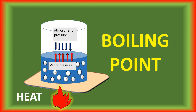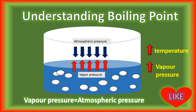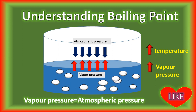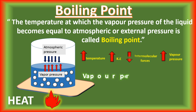Now let's discuss boiling point. Consider a liquid in an open container. With the increase in temperature, vapor pressure increases and ultimately reaches the atmospheric or external pressure. At this stage, boiling starts. Remember that at boiling, temperature remains constant although heat is continuously supplied. By definition, boiling point is the temperature at which the vapor pressure of the liquid becomes equal to the atmospheric or external pressure.